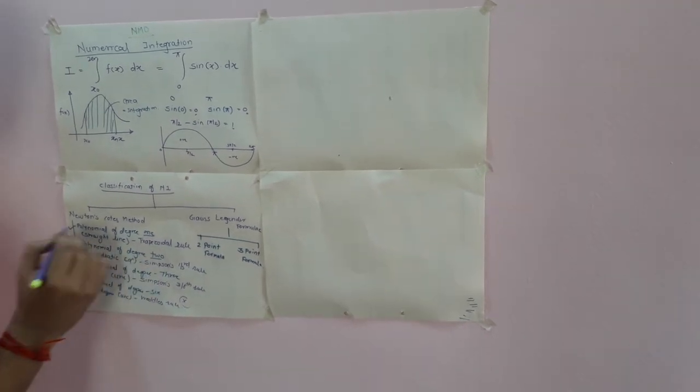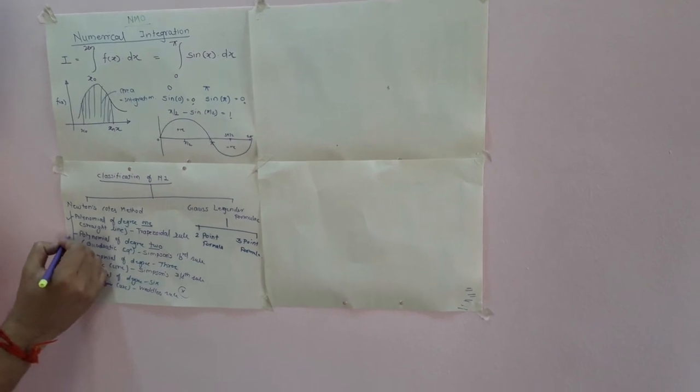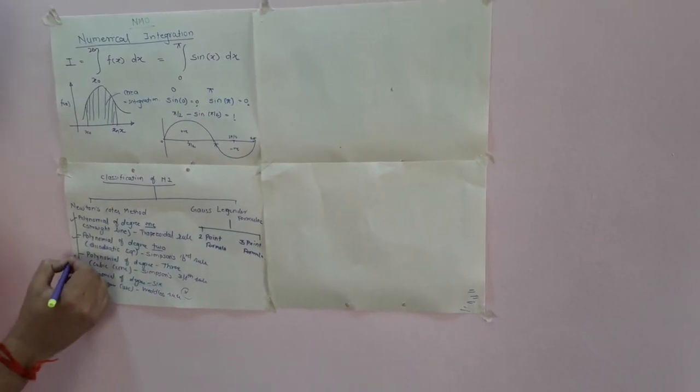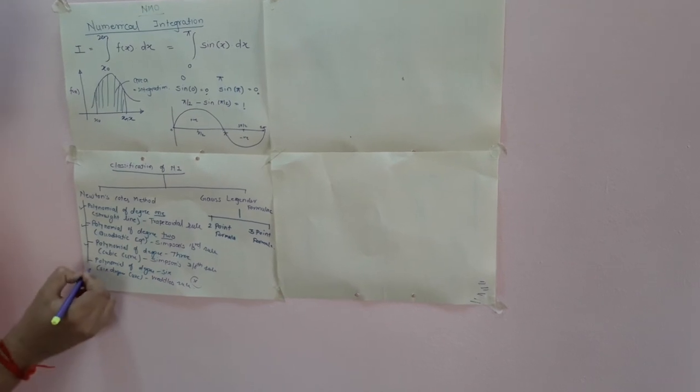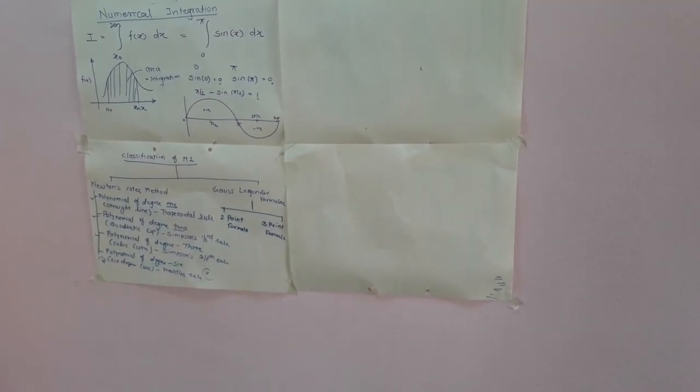Now if you have seen your syllabus, it is restricted to: the Trapezoidal Rule (polynomial of degree 1, straight line), polynomial of degree 2 (Simpson's One-Third Rule), polynomial of degree 3 (Simpson's Three-Eighth Rule) — though that last one is not part of your syllabus but is provided for your knowledge — and then the Gauss-Legendre two-point and three-point formulas. This is the full syllabus of numerical integration. We will now study each and every method in detail.